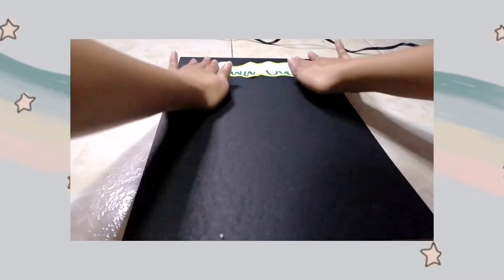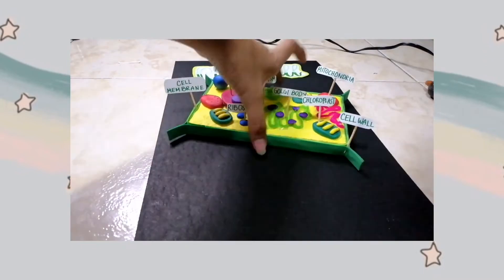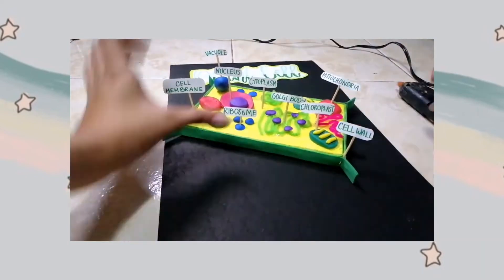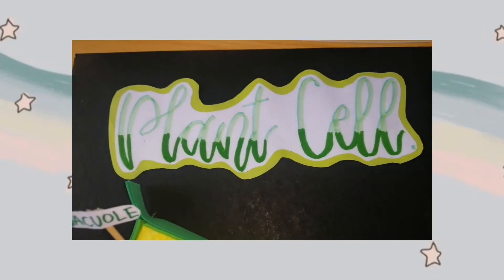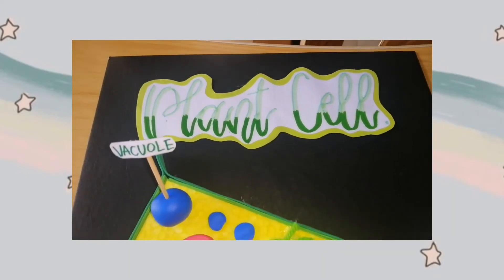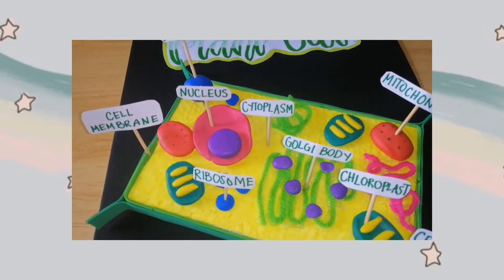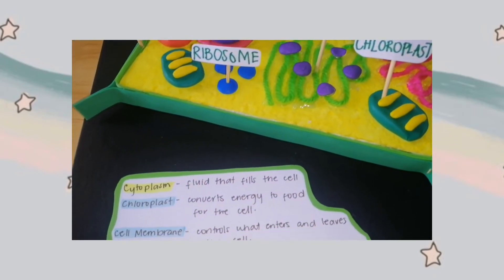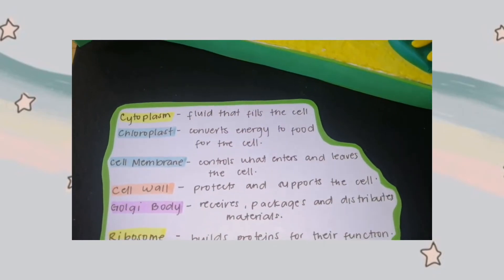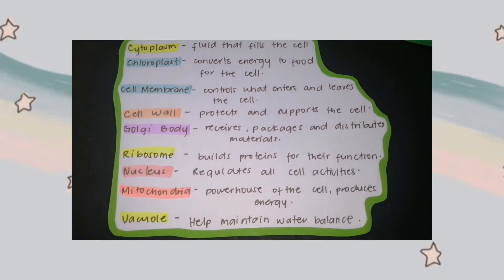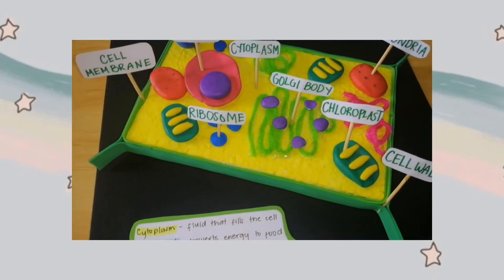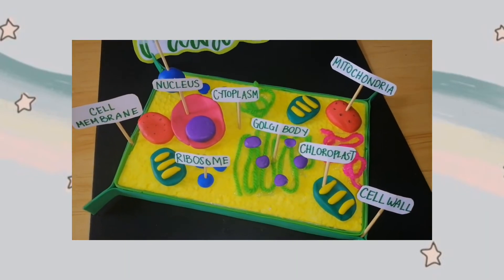Once I'm done labeling the parts, I stick the plant cell on the illustration board. Ta-da! Here's the finished product of my 3D plant cell. I also wrote the parts and functions of the plant cell because our teacher told us to do so.